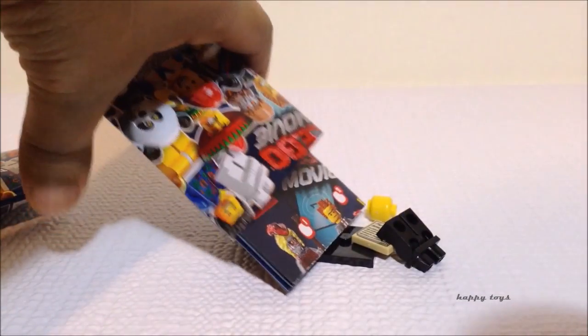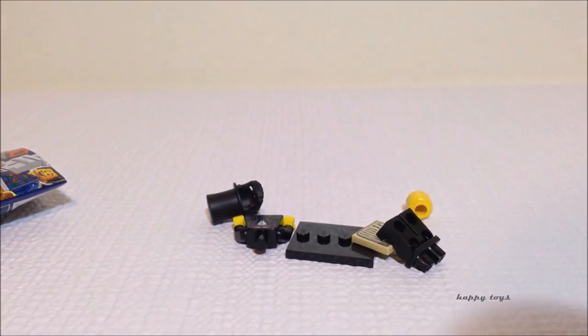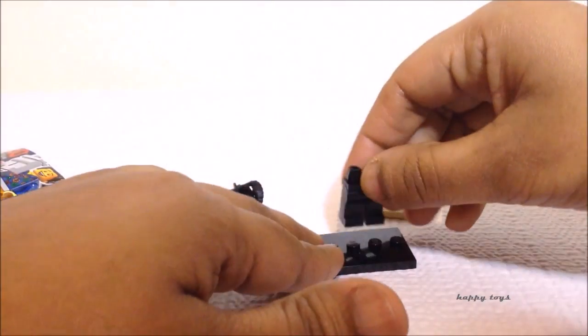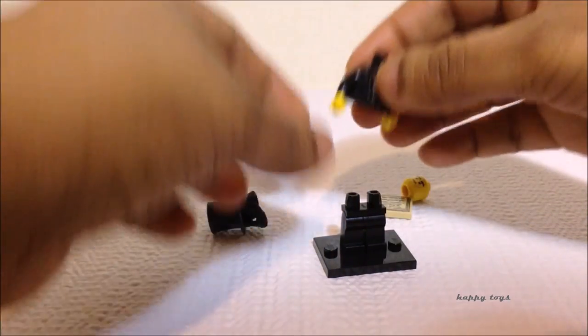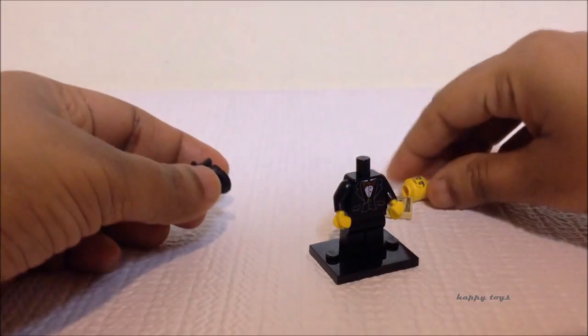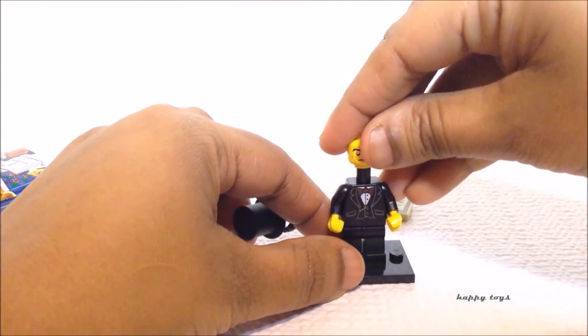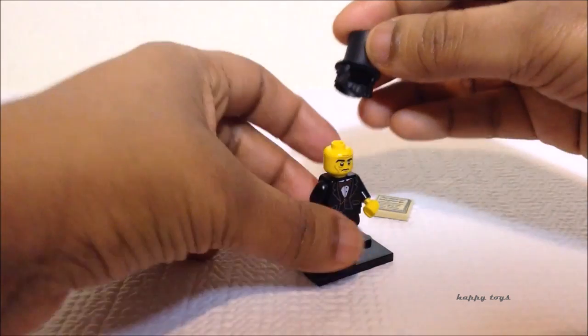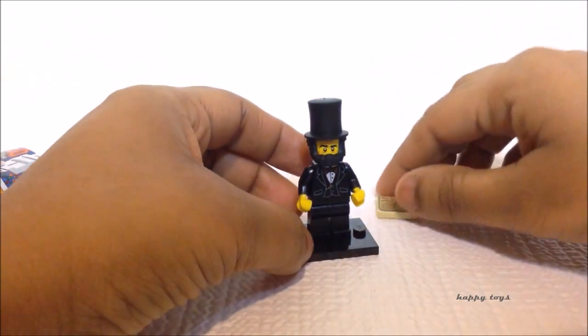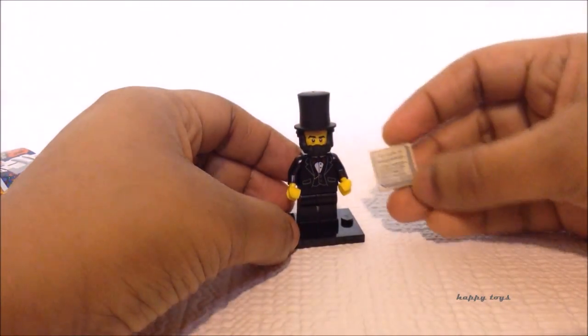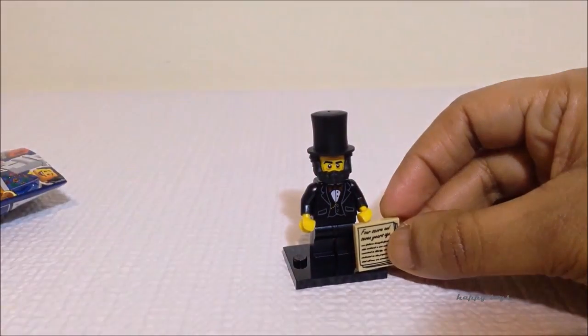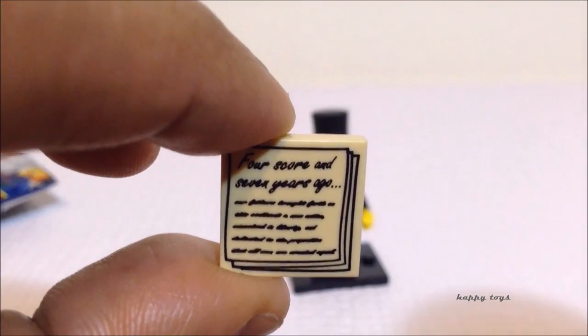Okay, we will see who is in the next pack. Yeah, it's Abraham Lincoln. Head with a beard, and also there's a tile, it's a nice touch. Look at the tile, what is written on it.